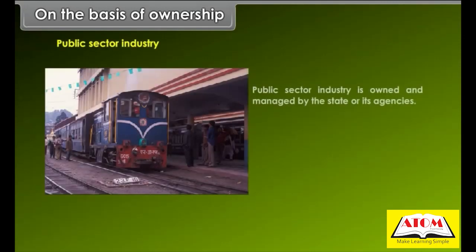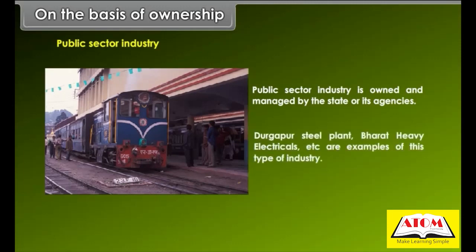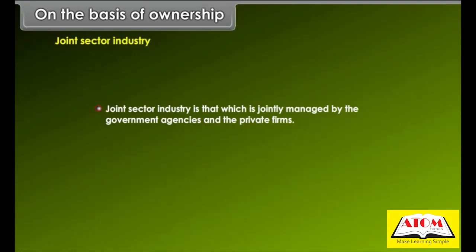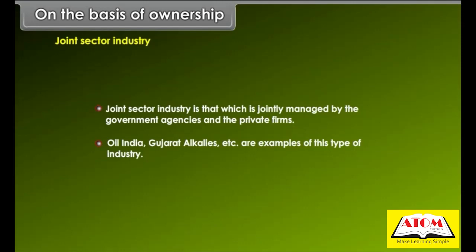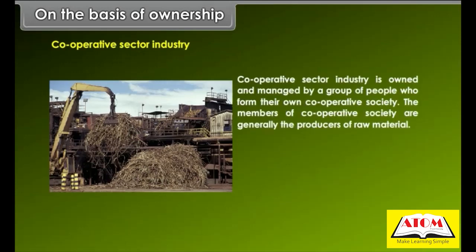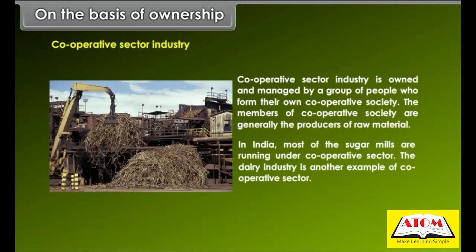Public sector industry is owned and managed by the state or its agencies. Durgapur Steel Plant and Bharat Heavy Electricals are examples. Joint sector industry is jointly managed by government agencies and private firms; Oil India and Gujarat Alkalis are examples. Co-operative sector industry is owned and managed by a group forming their own co-operative society. In India, most sugar mills and the dairy industry run under the co-operative sector.